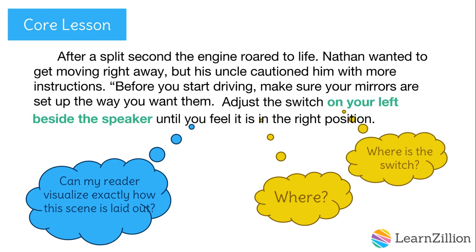The switch is on Nathan's left beside the speaker. In this sentence, I actually used two prepositional phrases to describe the switch's location. These phrases work as adjectives because they are describing the noun "switch." It is perfectly acceptable to use two prepositional phrases in a row if it helps describe the scene. Notice how there is no comma between the phrases — whenever we put two phrases together like this, we don't need to separate them with a comma.